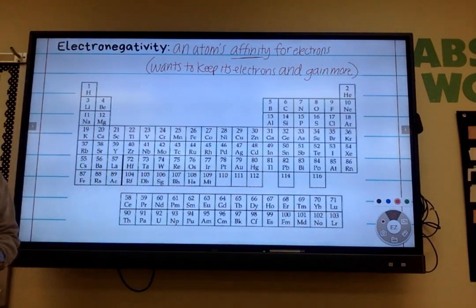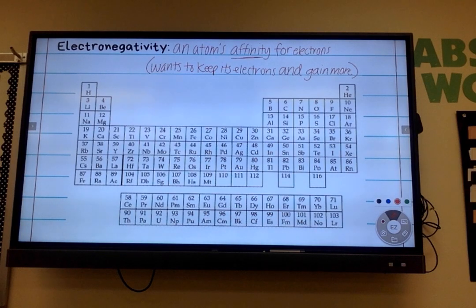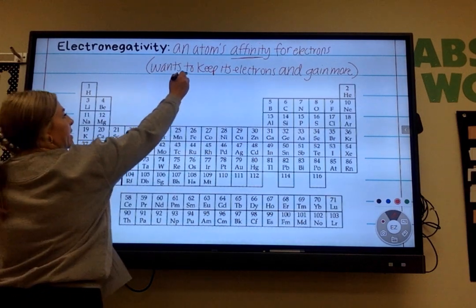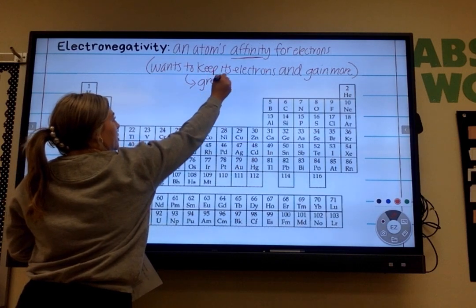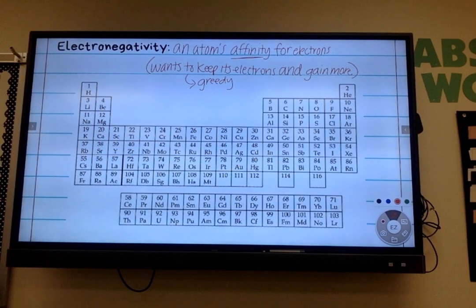Basically what affinity means is that the atom wants to keep its electrons and gain more. So the word that typically comes to mind when I think of electronegativity is that these atoms are greedy. So the higher electronegativity they have, the greedier they are. They really want to keep their electrons and get more. The lower electronegativity elements are kind of just like whatever, not greedy.